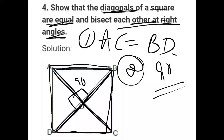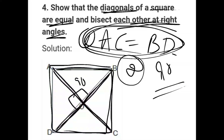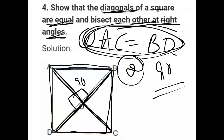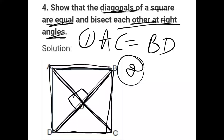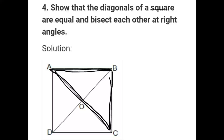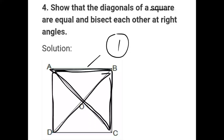So first of all, let's choose two triangles, choose three conditions and prove that diagonals are equal. Let's choose two triangles. This is our first triangle. Second triangle: choose A, B, D.